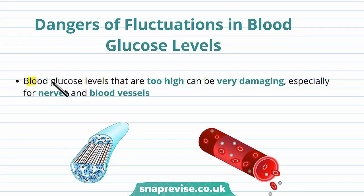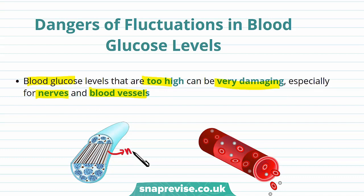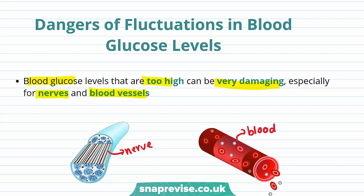Blood glucose levels that are too high can be very damaging, especially for nerves and blood vessels. This shows a nerve. Nerves are used to send electrical impulses that carry information across the body. This is blood. Blood transports the substances our body needs, such as glucose and oxygen.